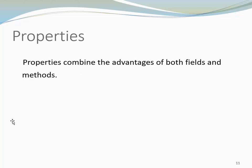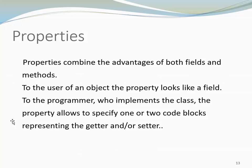Properties combine the advantage of both fields and methods. To the user of the object, the property looks like a field. To the programmer who implements the class, the property looks like a method.